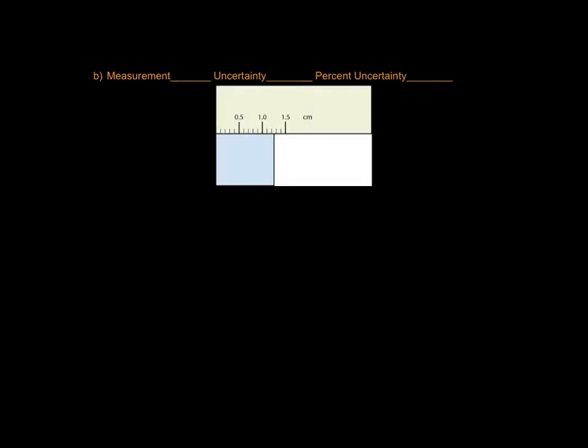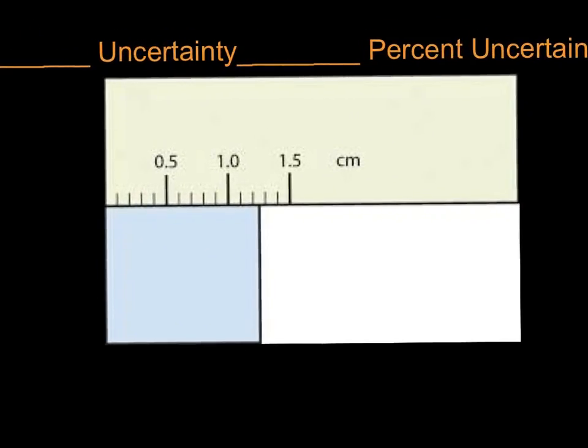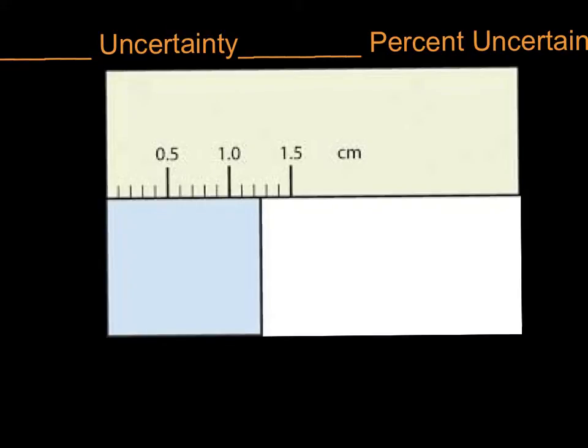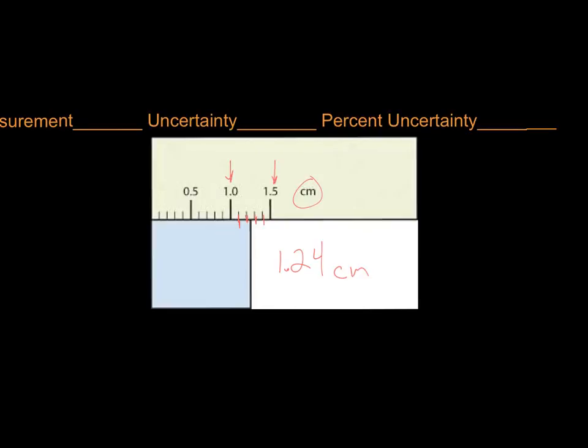Same type of question. We're looking at a ruler in units of centimeters. We've got markings at 1, 1.5, and then markings in between, which are going to be the tenths. So we're going to go to the hundredths. It is between 1.2 and 1.3. I'm going to call that 1.24 centimeters. The uncertainty is plus or minus 0.01 centimeters. And the percent is 0.8% again.